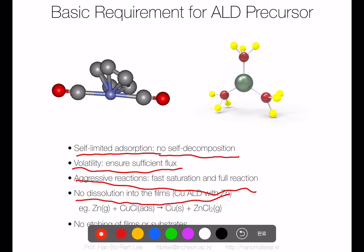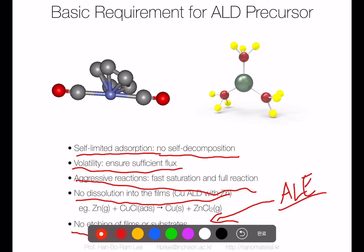The fourth requirement is no dissolution into the film. Sometimes the precursor dissolves into the film and changes the film composition. Also, there should be no etching of the film or substrate, as byproducts or the precursor can etch the surface or already-deposited film — that is a big disadvantage. Interestingly, this etching mechanism is actually the key mechanism for ALE (atomic layer etching), which is exactly the opposite reaction of ALD.